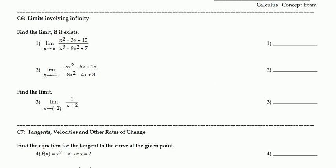Starting with concept number 6, we're supposed to find the limit if it exists. The limit is going to infinity. We should notice that the denominator has a larger degree — x cubed. When the limit goes to infinity and the denominator has a larger degree, that limit is going to be 0.